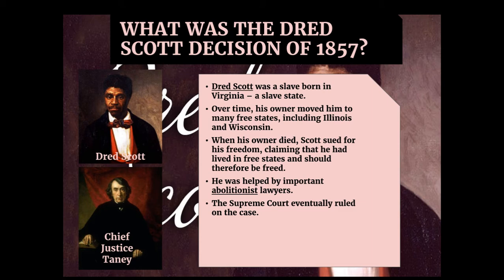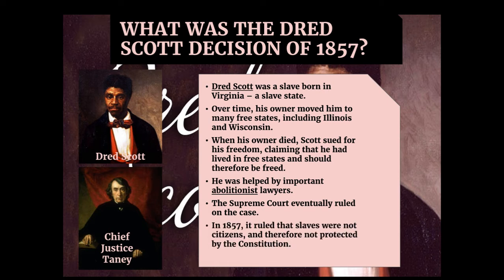The Supreme Court eventually had to rule on this case. At the time, the Chief Justice was a gentleman from Maryland by the name of Taney. In 1857, the Supreme Court ruled — and this is not one of their best decisions — that slaves were not citizens and therefore were not protected by the Constitution. They ruled that slaves were property, not citizens, with essentially the same legal rights as a pet cat. Therefore, they could not legally sue in court, and the case was dismissed because Dred Scott was not considered a person.